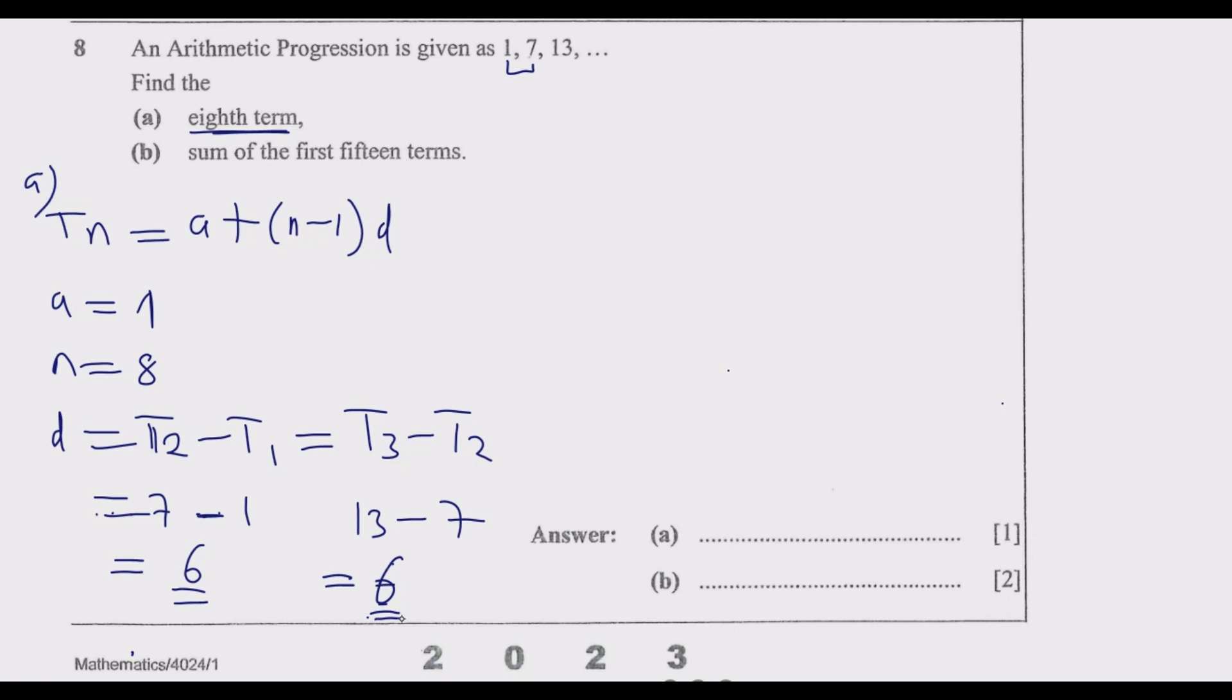So what is going to happen is we'll use this standard formula. The first term is 1, then plus (n-1) times d, where the common difference is 6. So it's 1 plus (n-1) × 6. I can expand this to 1 + 6n - 6, then collect like terms to get 6n - 5.